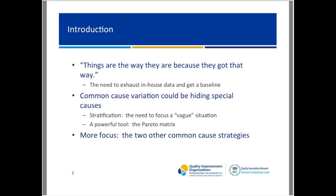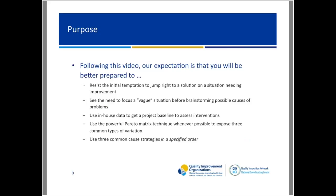There are two other special cause strategies, and our tendency is to jump to these first. I will show you that there are common cause strategies and they must be followed in a particular sequence. I'm hoping you'll be better prepared to resist the initial temptation to jump right to a solution. See the need to focus a vague situation before brainstorming possible causes. Use your in-house data to get a project baseline and use the powerful Pareto matrix technique to expose three common types of variation.